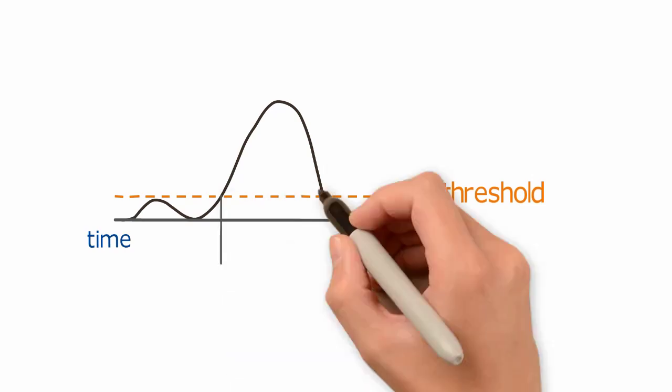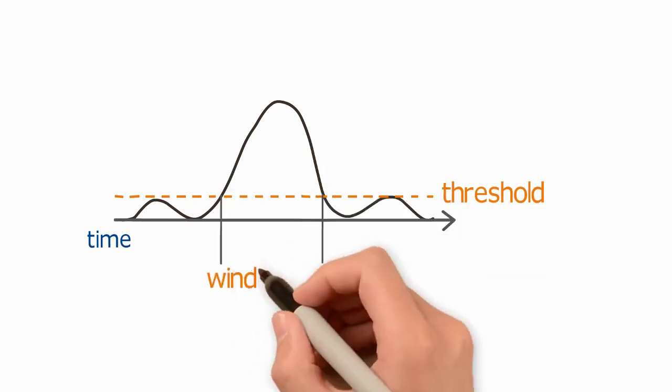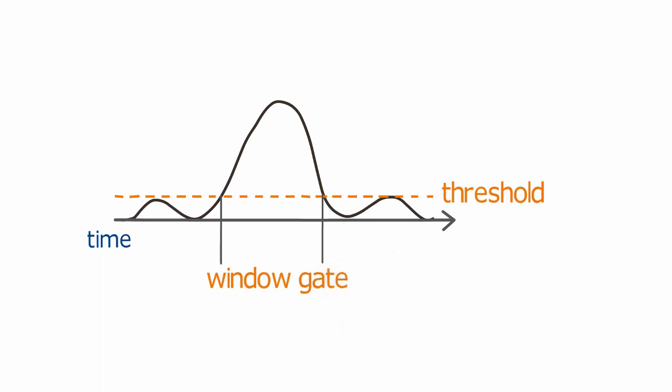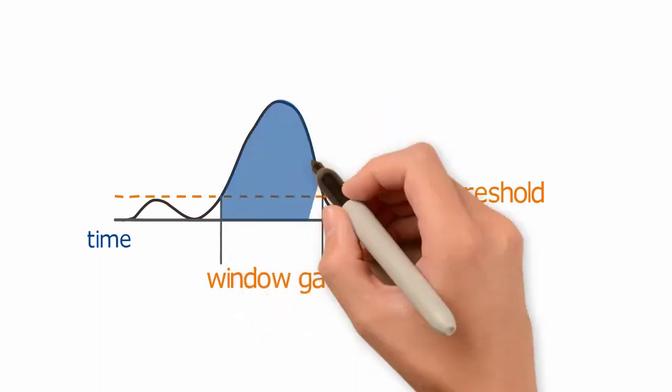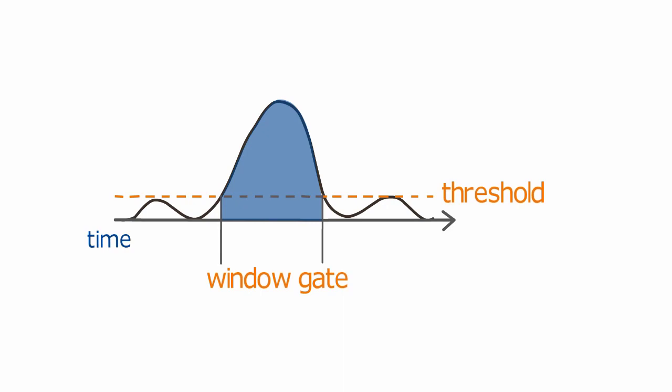The period of time that the pulse is above threshold is the window gate. Any signal measured during this time period makes up the area of the signal. However, a portion of the voltage pulse is below threshold, resulting in an incomplete measurement of the area of that pulse.